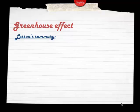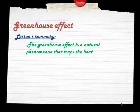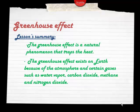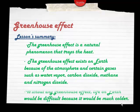Let's summarize what we've seen in this lesson. First, the greenhouse effect is a natural phenomenon that traps heat. Second, the greenhouse effect exists on Earth because of the atmosphere and certain gases such as water vapor, carbon dioxide, methane, and nitrogen dioxide. And lastly, without any greenhouse effect, life on Earth would be difficult because it would be much colder.